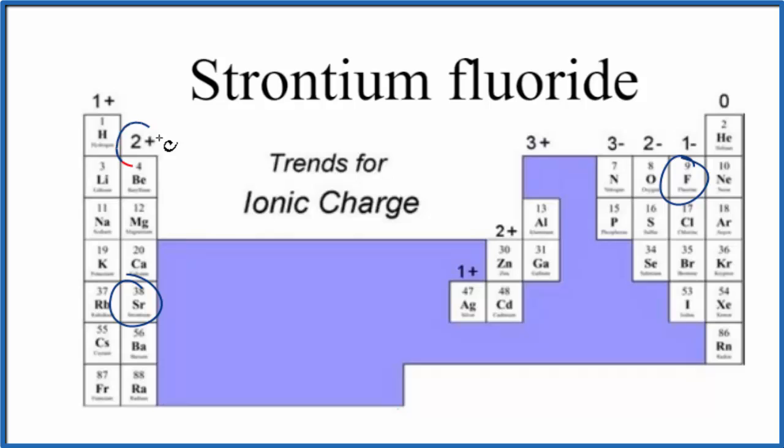Strontium is in group two, that'll be two plus, so we'll have a two plus charge on the strontium. And then the fluorine, that forms the one minus fluoride ion, so that's one minus.